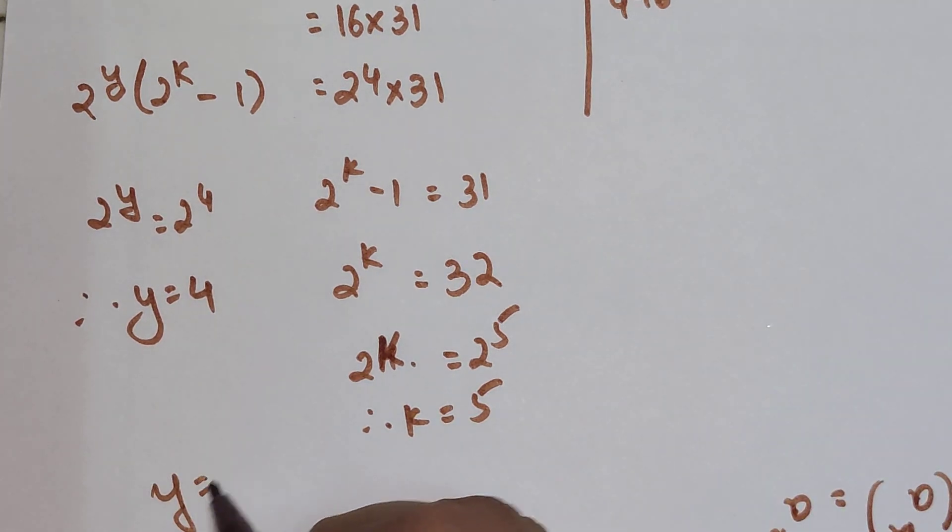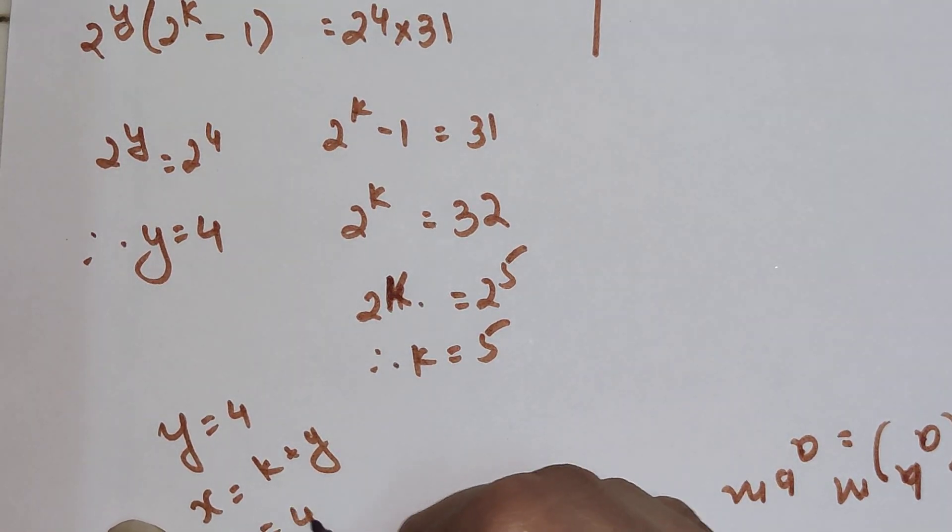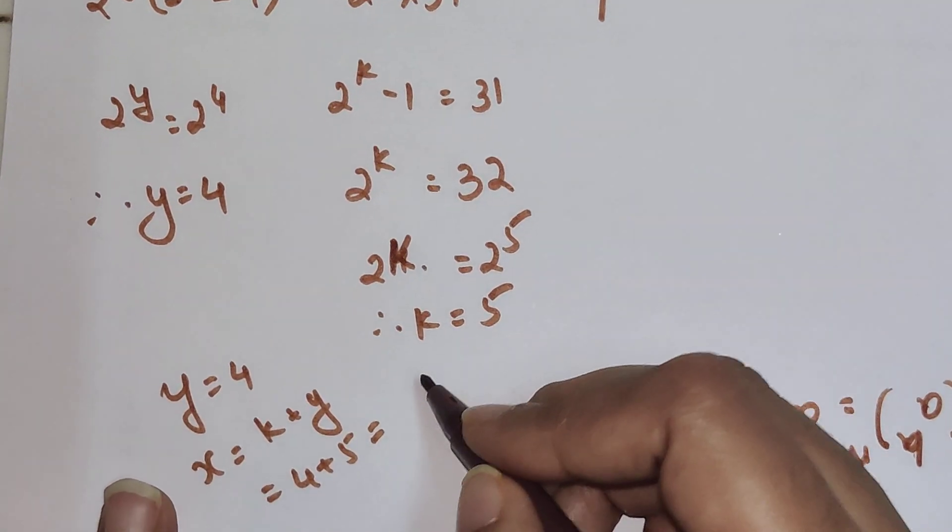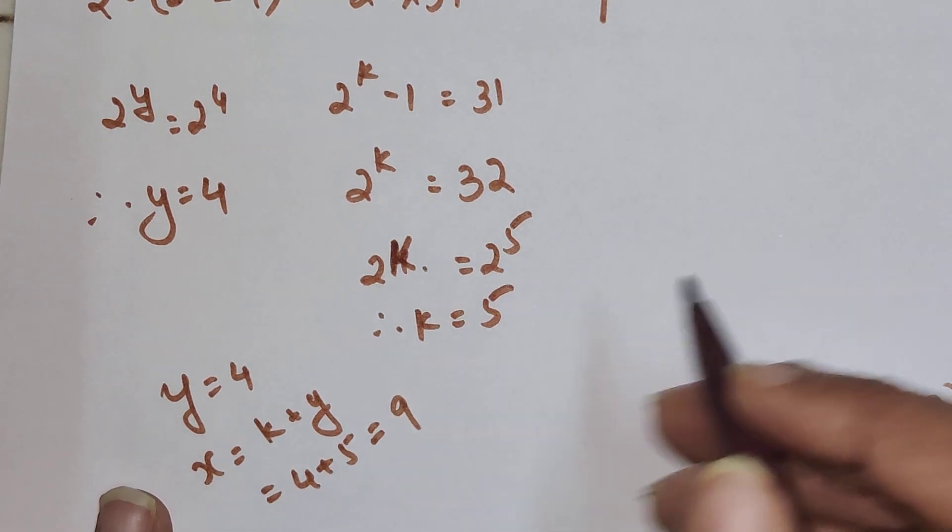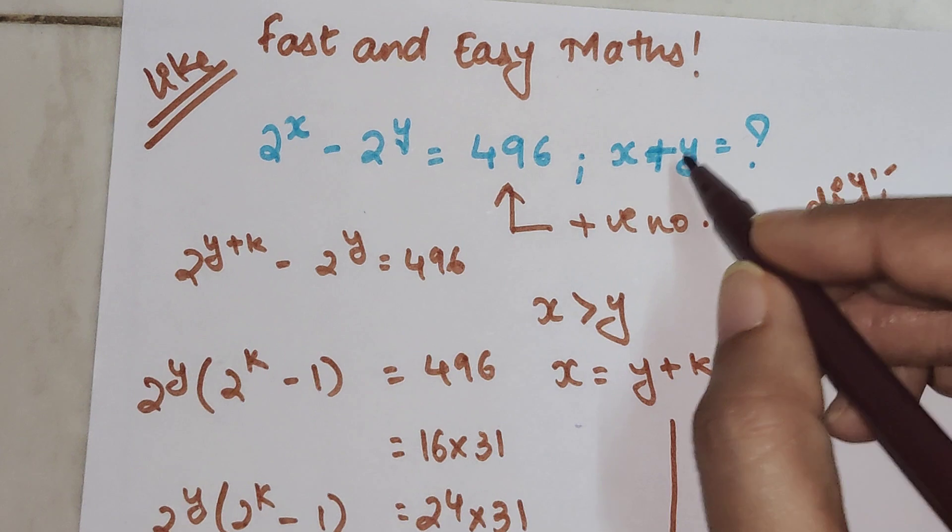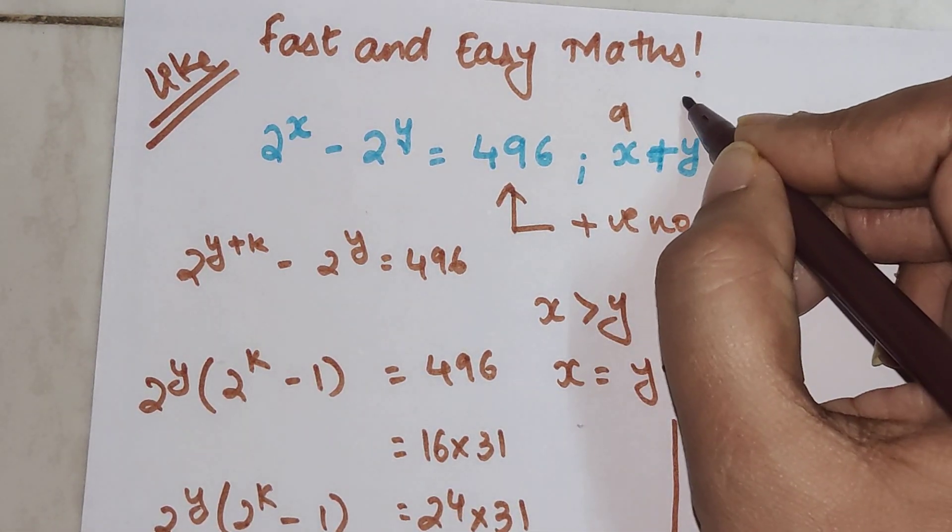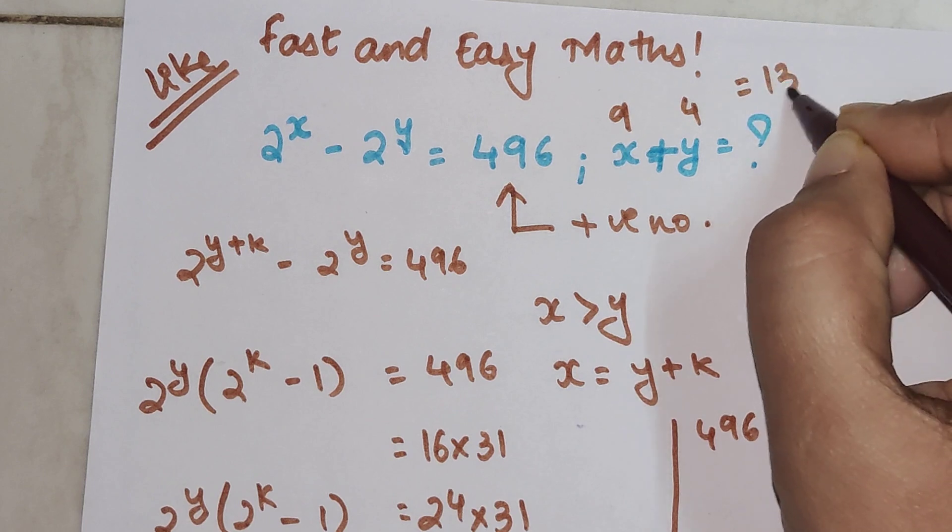Out of this I can say y equals 4 and x equals k plus y, which is 4 plus 5, which is coming out to be 9. And my question was to find the value of x plus y. So x value is 9, y value is 4, so the answer is 13.